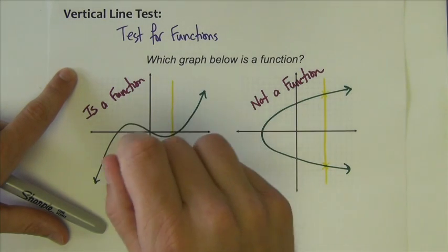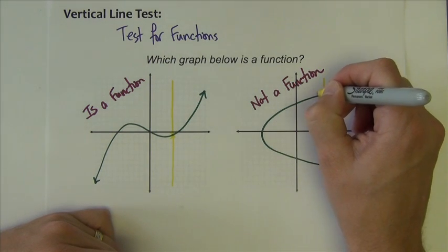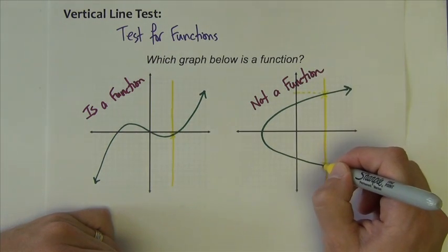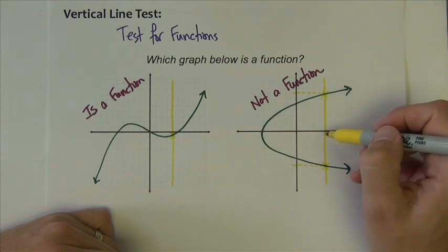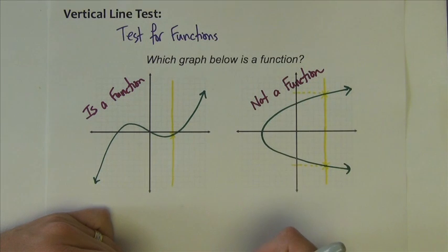Every x has only one y over here. Versus, over here, this x had a y up there, had a y down here. So, I'm looking at a single x value that has two different y values. It makes it not a function.